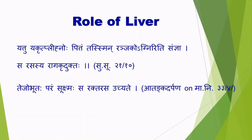Rasa Sya Raga Krut Uktaha means Rasa gets red coloured because of the activity of Ranjaka Agni. It has to be kept in mind that the absorbed materials reach the liver first, and from the liver they enter the systemic circulation. So the Rasa Dhatu which reaches Hridaya is actually to be understood as reaching Hridaya after crossing the liver, and in the liver it gets converted into Rakta. So Rasa and Rakta simultaneously move in the circulatory system.